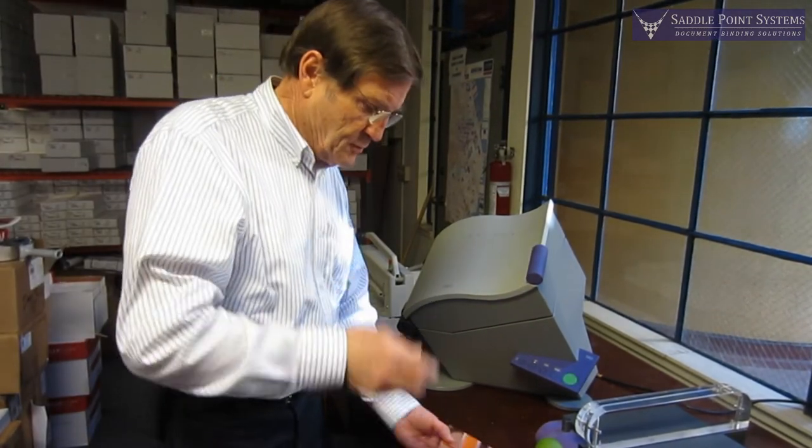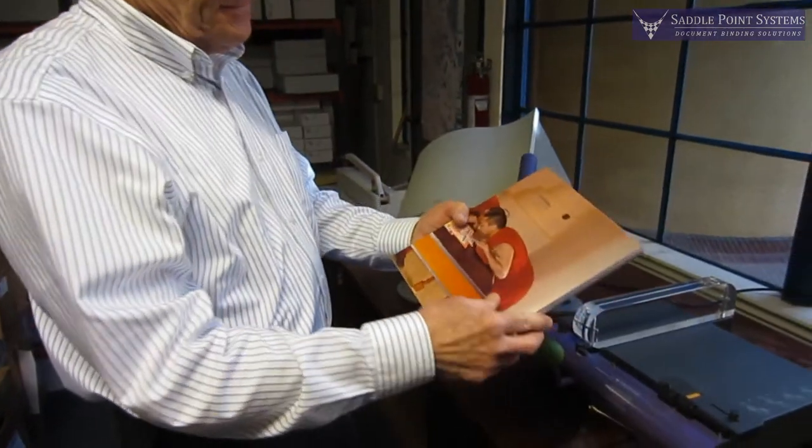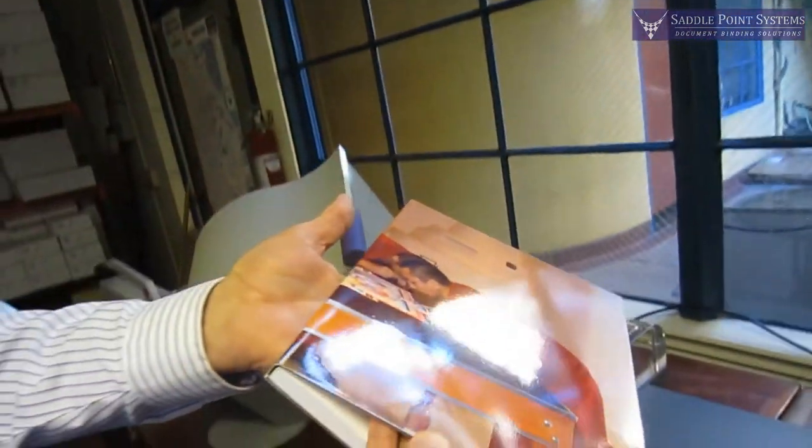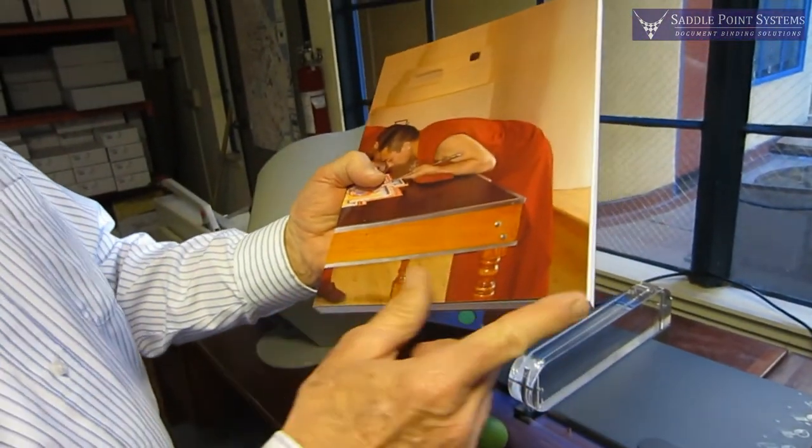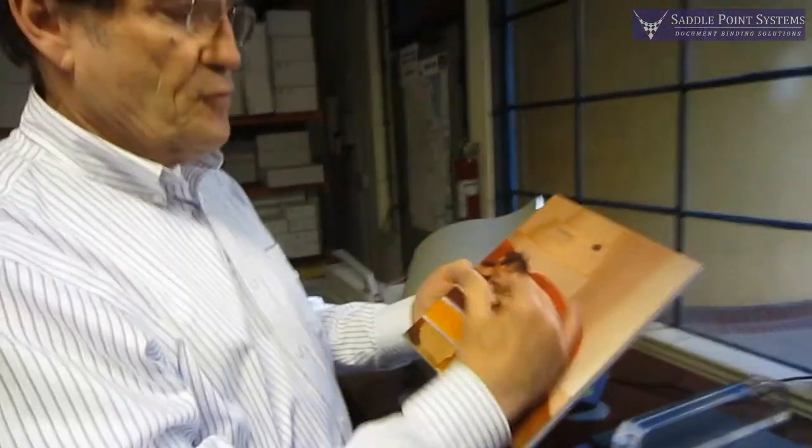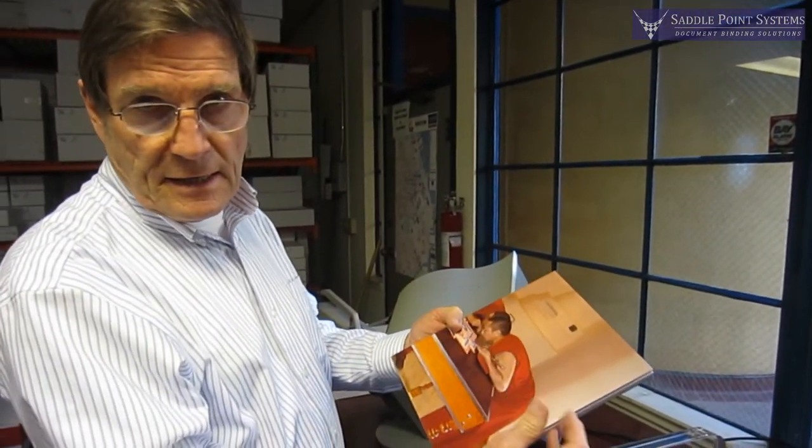And then the other thing about it is, once it's done, it's nicely ironed flat. It just is a gorgeous book. And then you can trim it out any way you like. You can even corner around, you can make two photo books out of this just by cutting it in half.